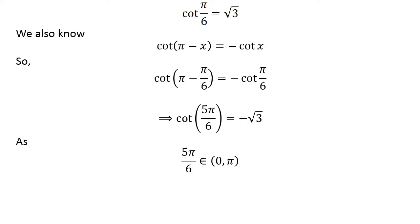As 5 pi over 6 lies in the open interval 0 to pi, therefore 5 pi over 6 is the principal value of inverse cotangent of minus square root of 3.